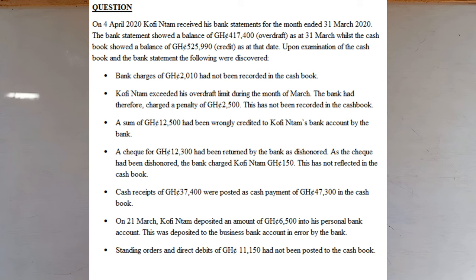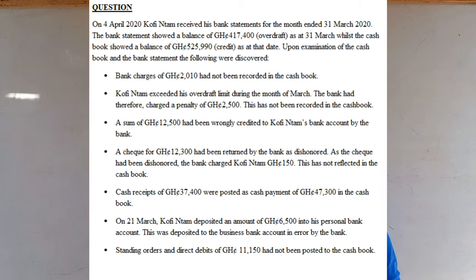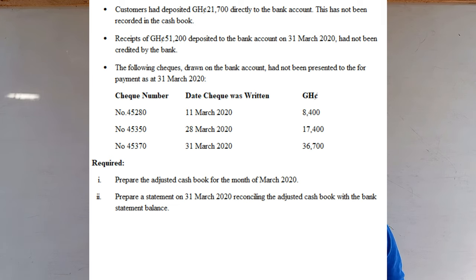Cash receipts of 37,400 Ghana cedis were posted as cash payments of 47,300 in the cash book. On 21st March, Kofintam deposited an amount of 6,500 Ghana cedis into his personal bank account. This was deposited to the business bank account in error by the bank. Standing orders and direct debits of 11,150 Ghana cedis had not been posted to the cash book. Customers had deposited 21,700 directly into the bank, and this has not been recorded in the cash book.